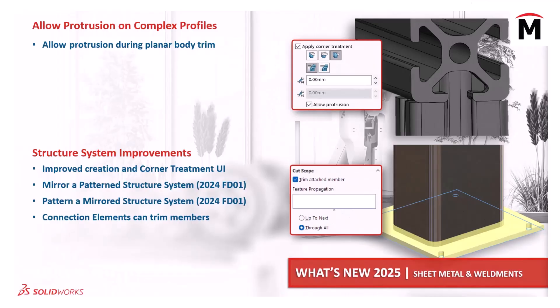Let's discuss some of the other great enhancements in 2025. For complex weldment profiles we now have the ability to allow protrusions during planar body trim. There are several enhancements to the structure system, including improved creation of structure systems as well as improved corner treatment UI. We can mirror a patterned structure system or pattern a mirrored structure system, and you can also trim members with connection elements. There's so much more to go over, so definitely check out the what's new documentation for more information on what's new in SOLIDWORKS 2025 with sheet metal, weldments and structure systems.